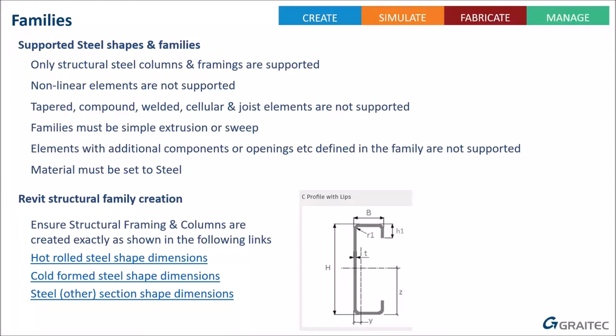Autodesk have created links for hot rolled steel shapes, cold form steel shapes, and other steel shapes. From testing, we've found that for a C profile with lips, you want to make sure the lips are on the correct side of the profile. If you create them with lips on the wrong side and transfer the model into Advanced Steel, the sections can get flipped.